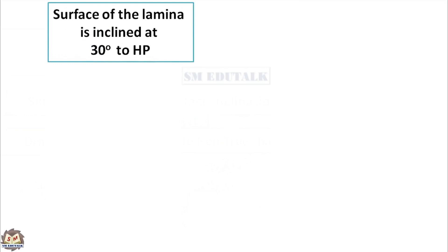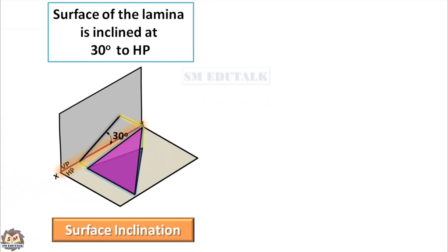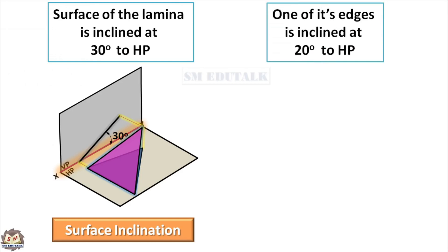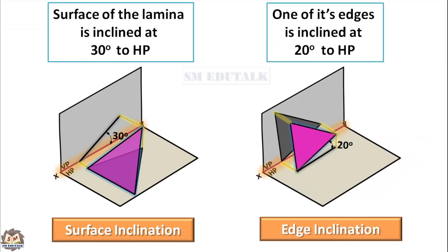Surface of the lamina is inclined at 30 degrees to HP — this is a sample condition for surface inclination. Surface inclined means the entire object is inclined. You can see that the entire lamina is inclined at 30 degrees to HP. Its front view is a line and top view is a plane. One of its edges is inclined at 20 degrees to HP — this is a sample condition for edge inclination. One of its edges is inclined means any one edge is inclined, not the entire object surface. Its front view is a plane and top view is a line.